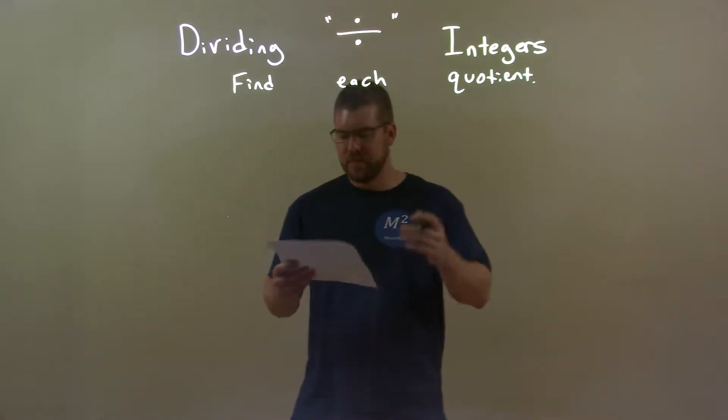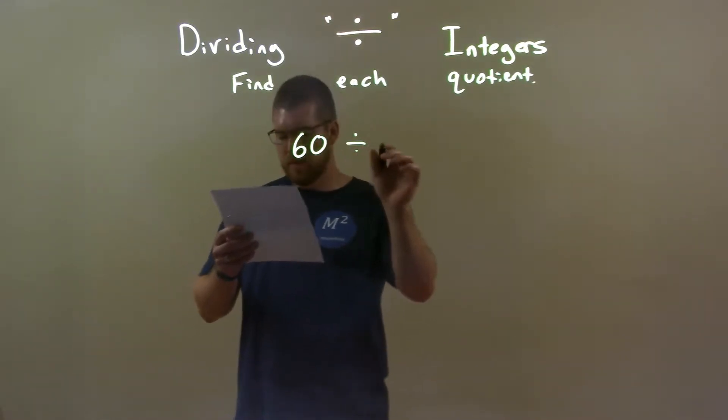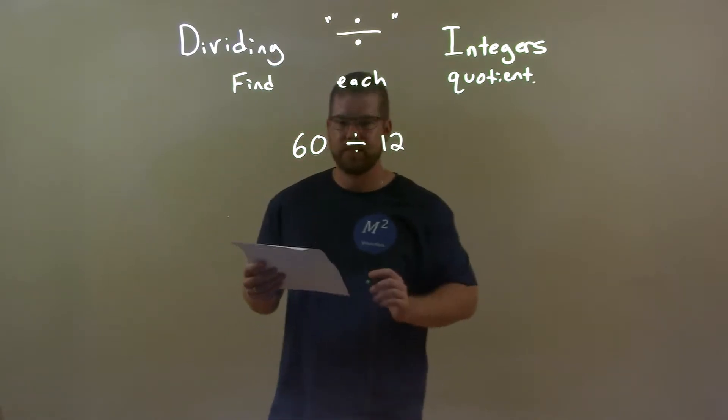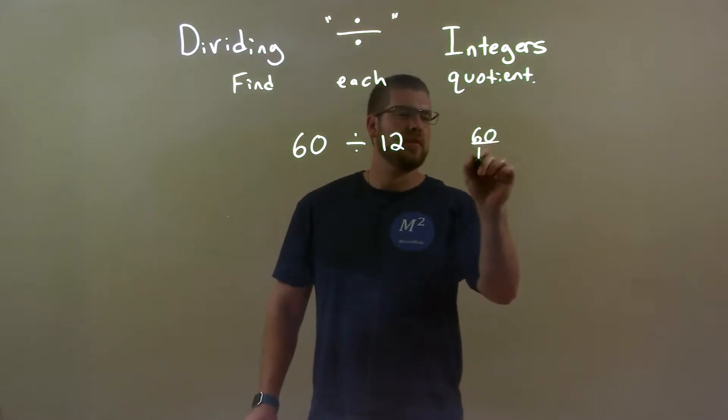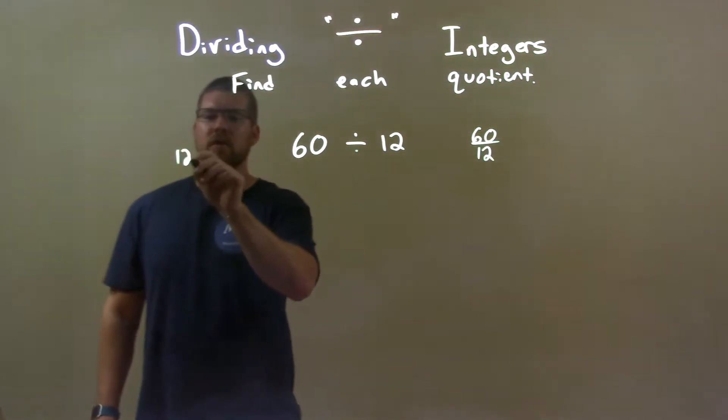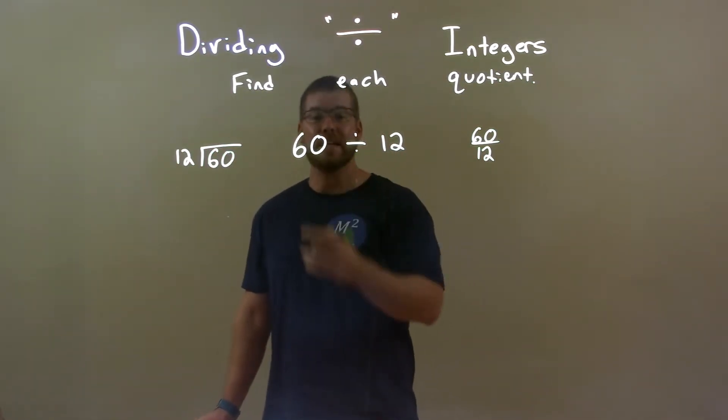So, if I was given these integers: 60 divided by 12. We have 60 divided by 12. Well, we can see that as a fraction, 60 over 12, or 12 goes into 60. But the same question is still there. How many times does 12 go into 60?